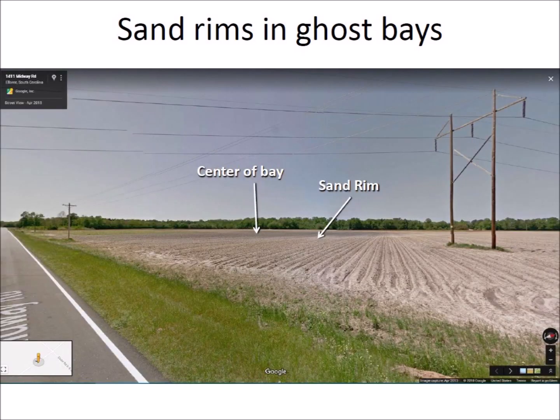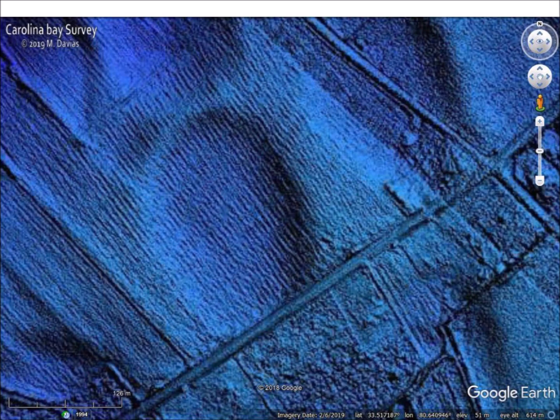Driving through North and South Carolina, you can identify Ghost Carolina Bays by the contrast of the darker soil inside the bay and the white sand of the rim. The darker soil originated from organic matter that accumulated in the bays before they were drained for development. This LiDAR image with 20 times vertical exaggeration shows the clear outline of the same Ghost Carolina Bay. LiDAR is a laser-based imaging technology that is very important for the study of the Carolina Bays because it reveals details that cannot be seen with aerial images.